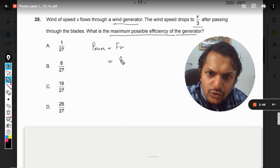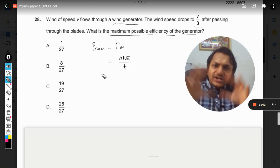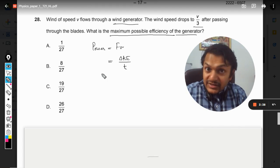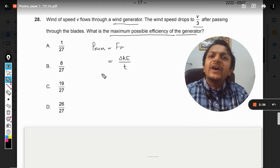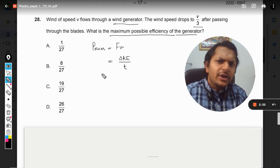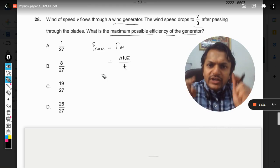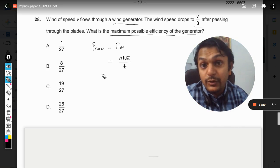Instead, we use a different formula: the change in kinetic energy divided by time. We can use this because power is defined as the rate of doing work or rate of change in energy. We are going to derive this formula now.